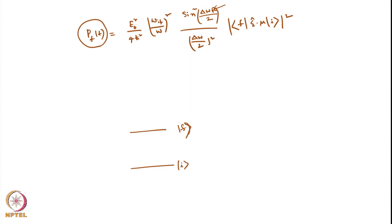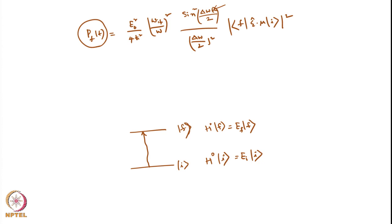There is one issue we will look at in this lecture: what if state f is not isolated? In this case, you are going from an initial state i, which is precisely defined, to a final state f, which is also precisely defined — H₀|i⟩ = E_i|i⟩ and H₀|f⟩ = E_f|f⟩. But this is when f is a clean, well-separated state, which may not always be the case.